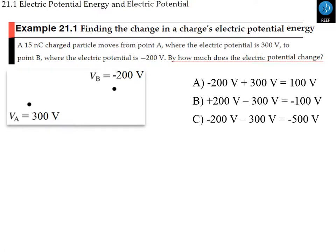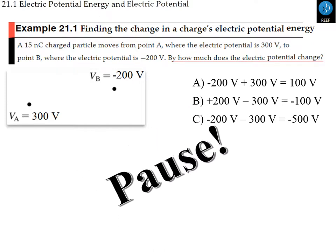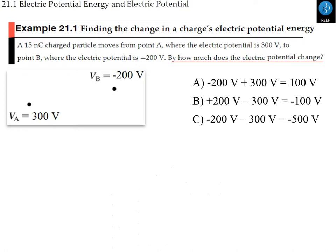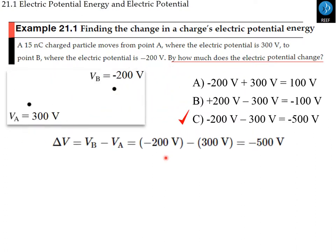Example 21.1: A 15 nanocoulomb particle moves from point A where the potential is 300 volts to point B where the potential is minus 200 volts. How much does the electric potential change? For electric potential, we don't care about the charge being moved — it's only the final potential minus the initial potential: minus 200 minus 300 equals minus 500 volts.